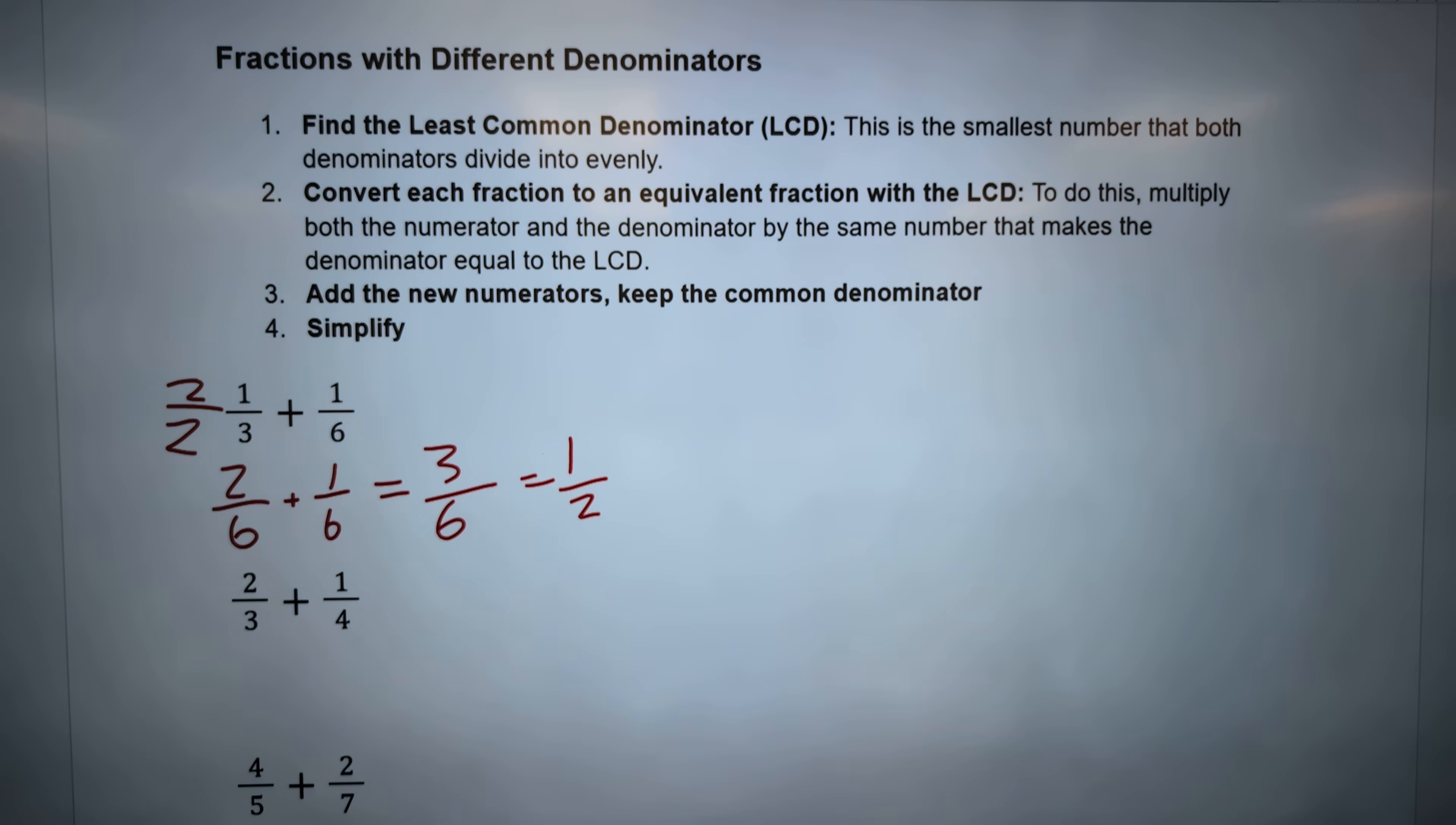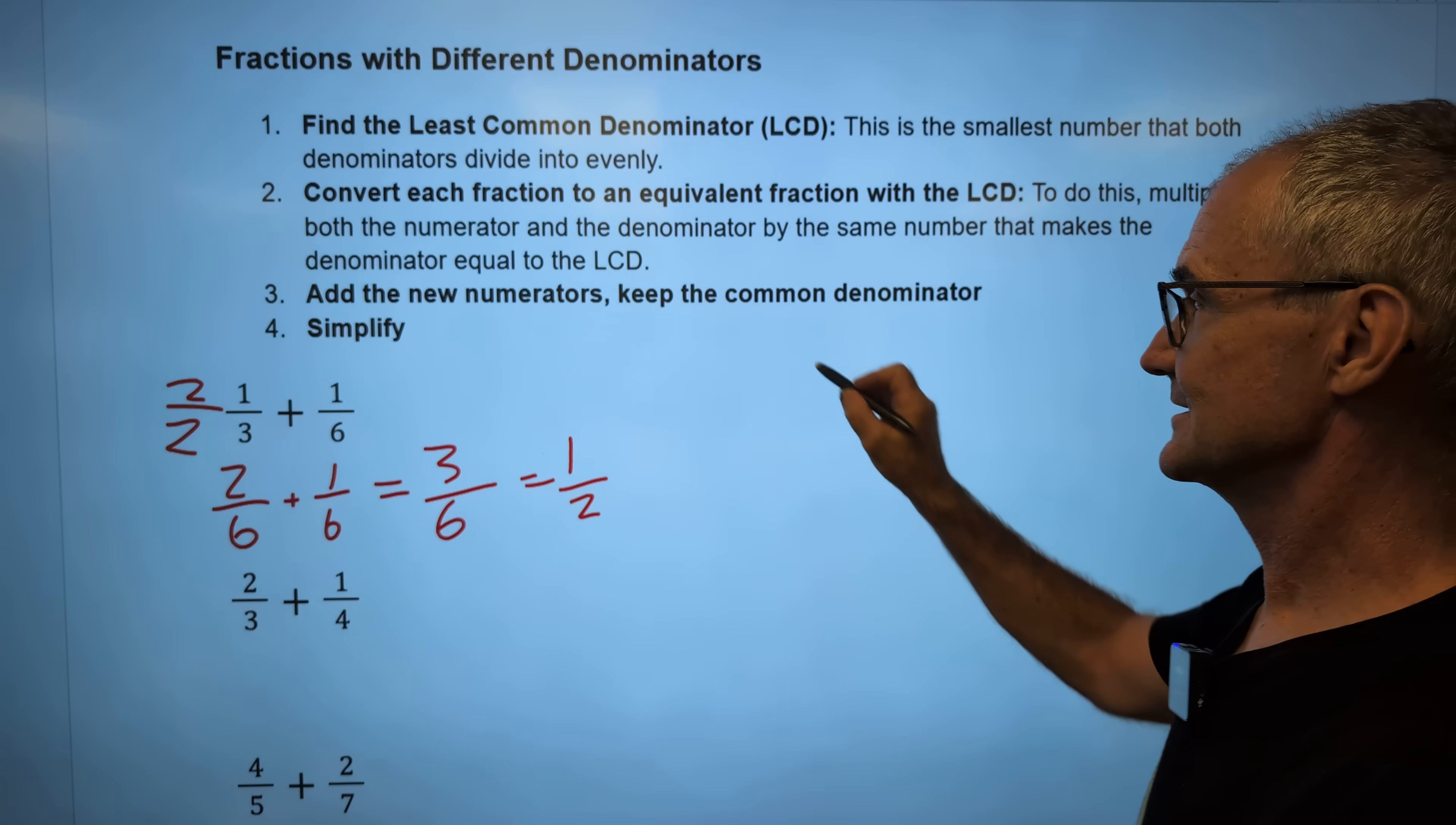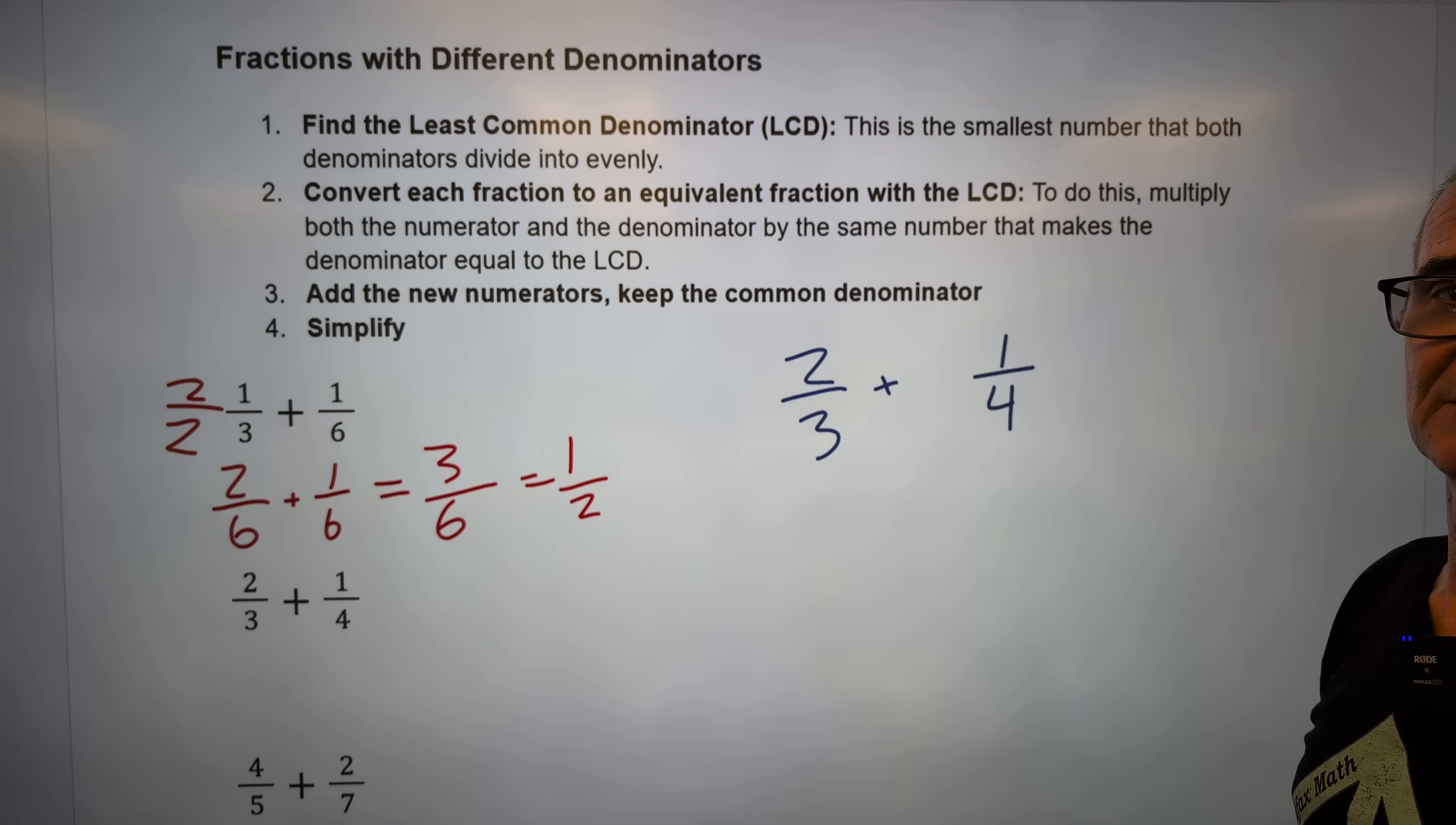Let's take a look at the next problem. I would pause the video here and do this problem before I do it. Make sure you understand the ideas. So I have two-thirds plus one-quarter. I'm looking for my least common denominator. What will three go into and four?